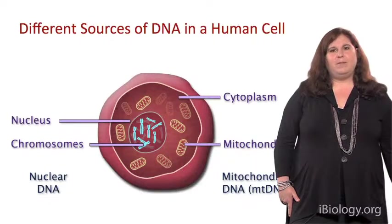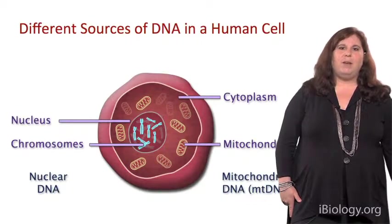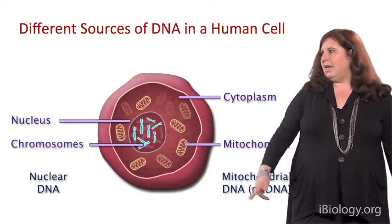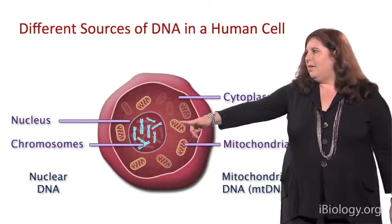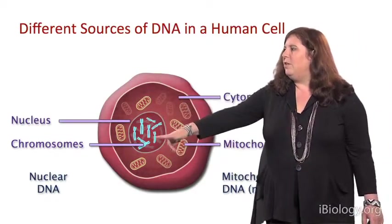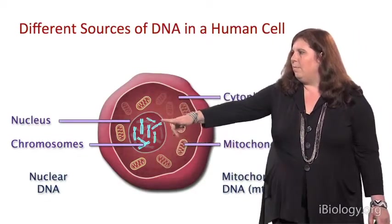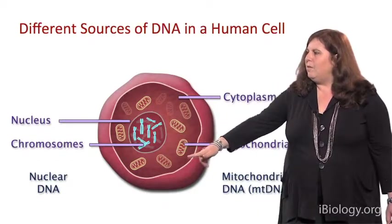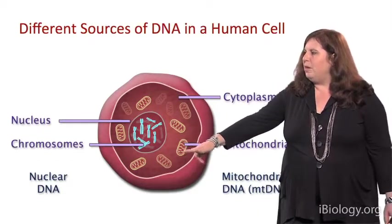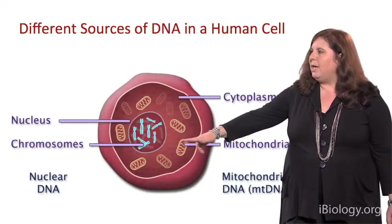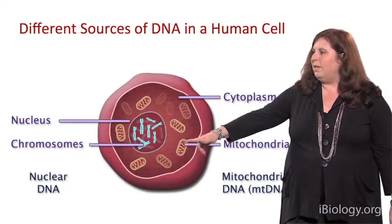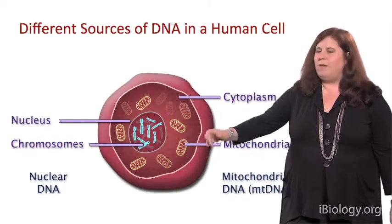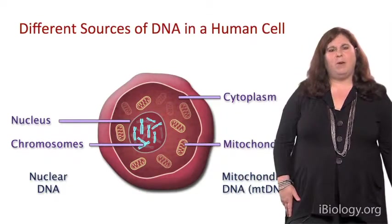I want to talk about the different sources of DNA that we use to reconstruct human evolutionary history. One source is DNA present in the nuclear genome, located in the nucleus of the cell. Another type of genome is present in the mitochondria of the cell, which is the energy-producing organelle.